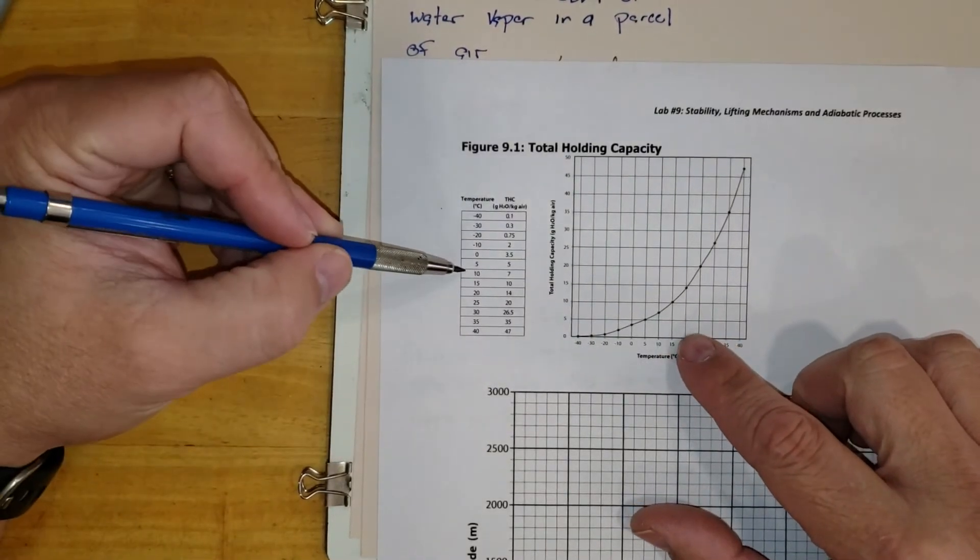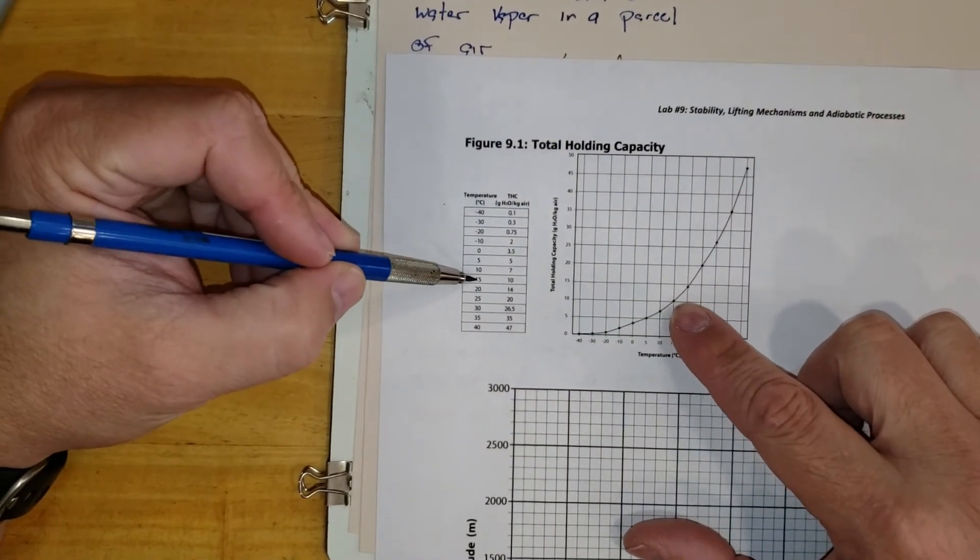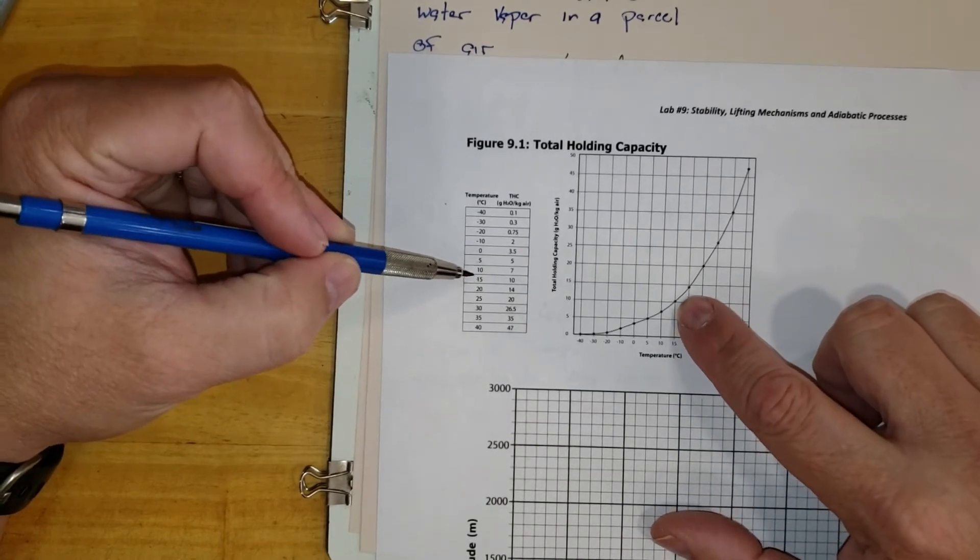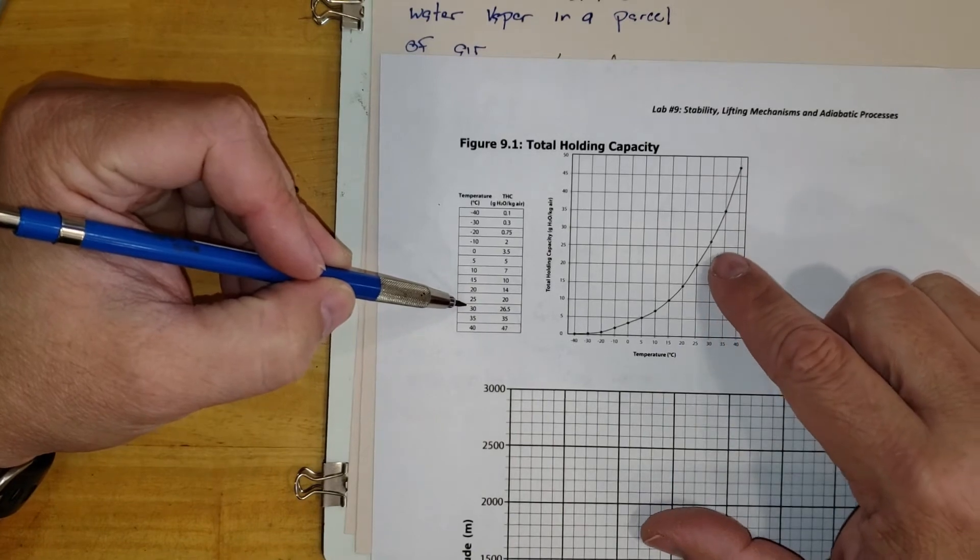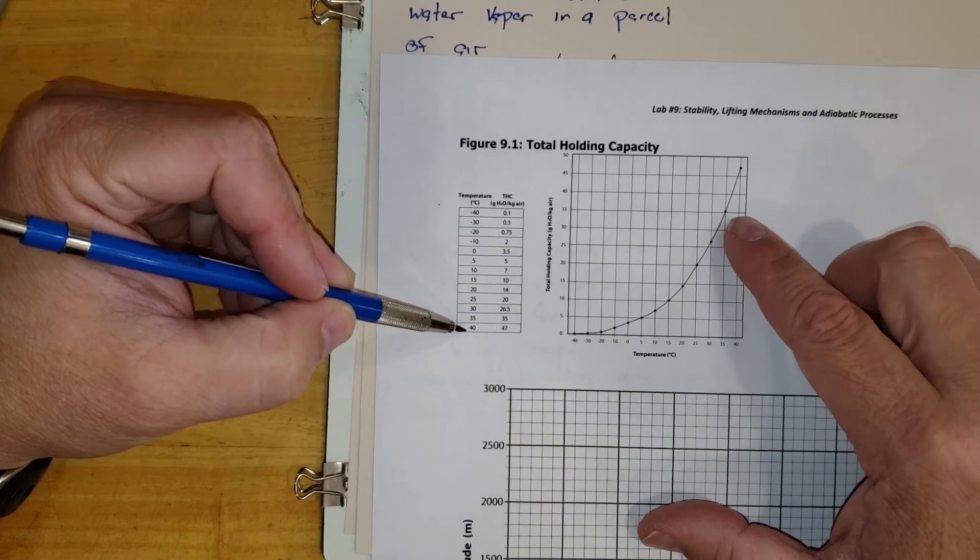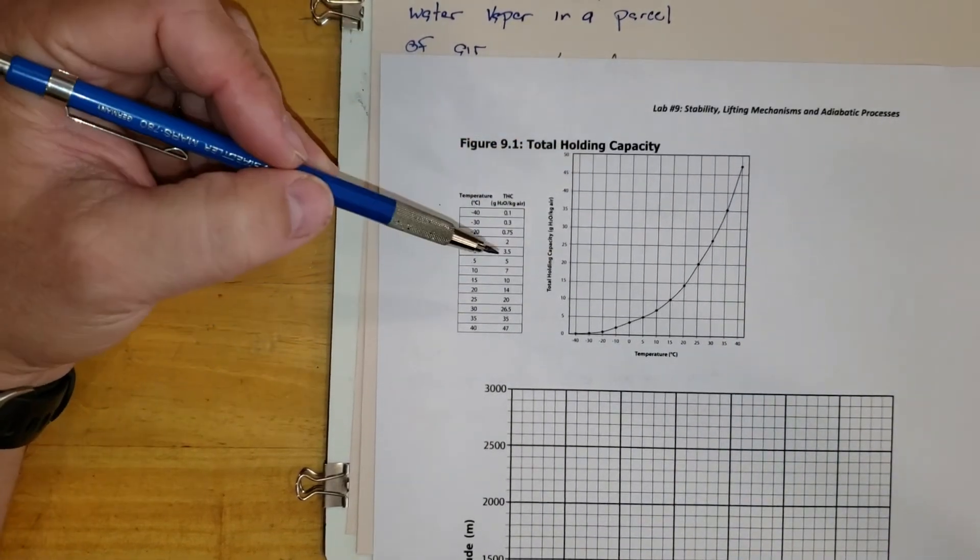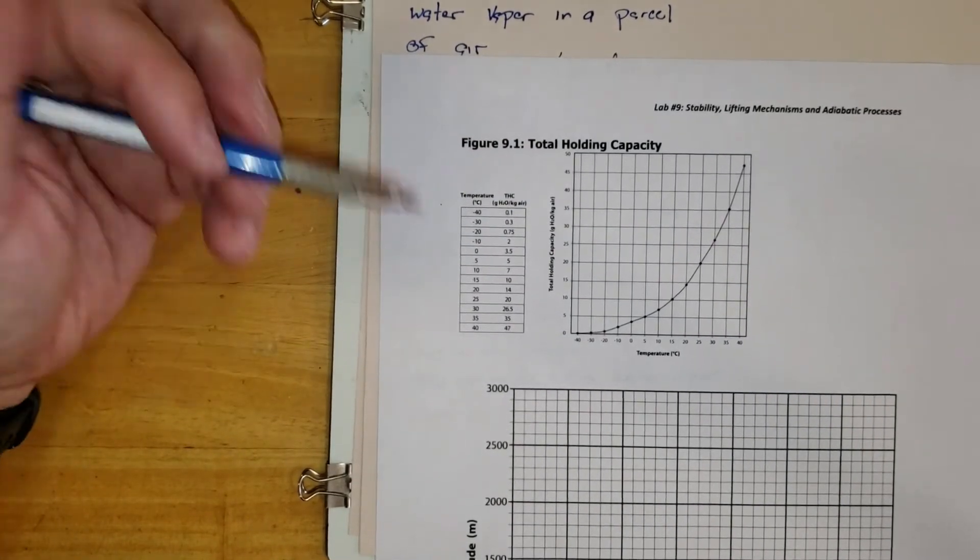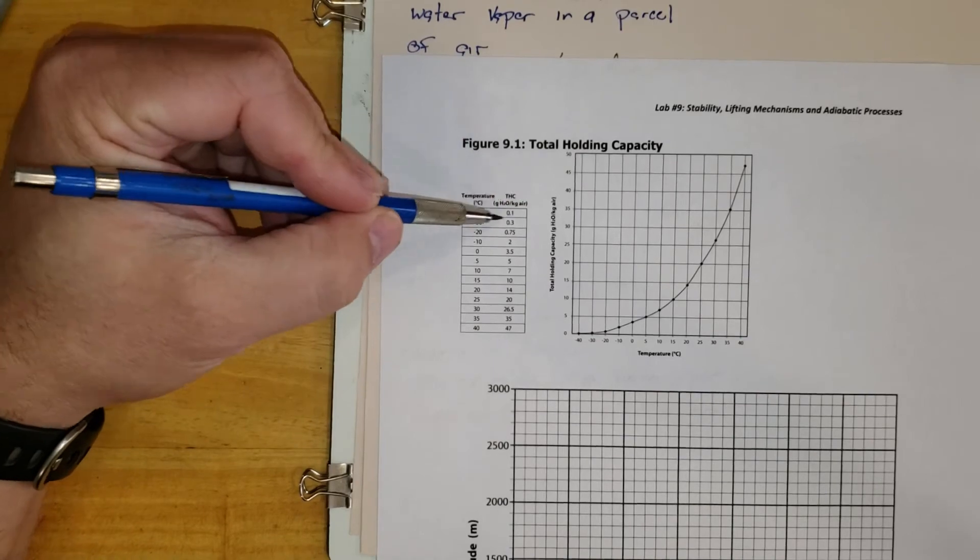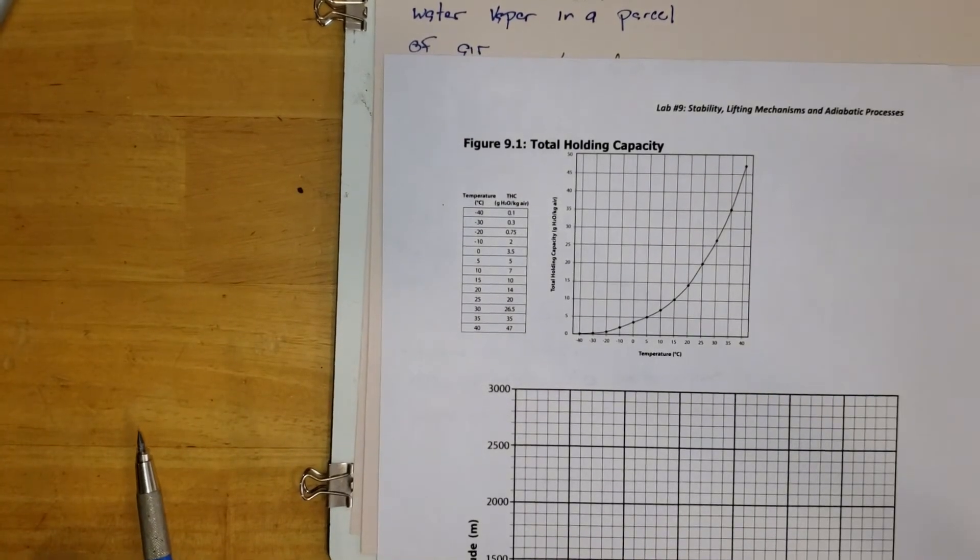As it gets warmer, we'll go up to freezing. At zero, it can hold 3.5, then at five it's at five, at 10 it goes up to seven, at 15 it goes up to 10, 20 is at 14, 30 is at 26.5, and 40 goes all the way up there to 47. This little chart is something that is just made available to us. So it shows us the temperature and that total holding capacity.